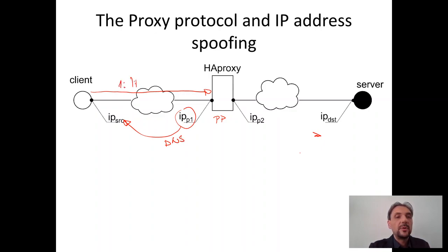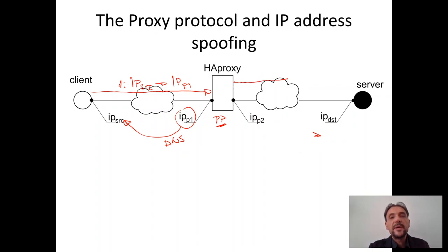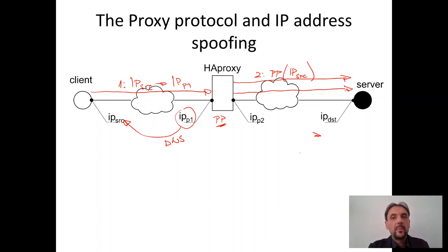The client contacts the IP address of the proxy using its actual source IP address. Then the proxy prepares a special header as defined in the proxy protocol and forwards the special request to the server, sending it the IP address of the client. After that, on the same port of the server, it continues the communication, forwarding from the IP address of the proxy to the IP address of the actual server.